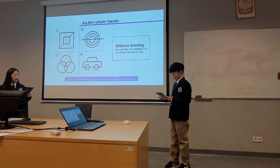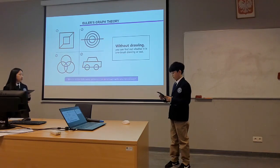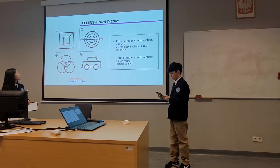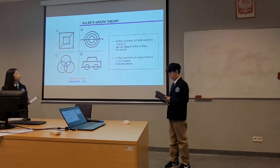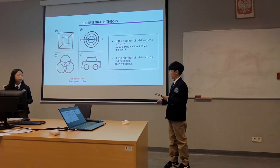Then, let's find out which shapes have a single-brush drawing in the pictures around us. Which of the following pictures can be drawn with one brush? Since figure one has four odd points, it can't be a one-brush drawing. But figures two, three, and four have zero or two odd points, so they can be single-brush drawings.